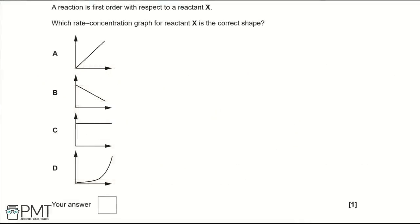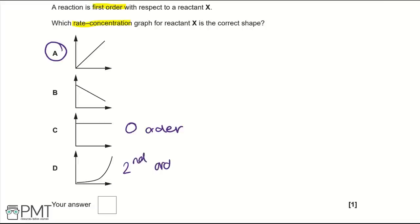For a first-order reaction with respect to reactant X, which rate–concentration graph is correct? Graph A shows the correct rate–concentration graph for a first-order reaction. B shows a concentration–time graph for first order. C shows a zero-order rate–concentration graph. D shows a second-order rate–concentration graph. Our answer is A — write A in the answer box.